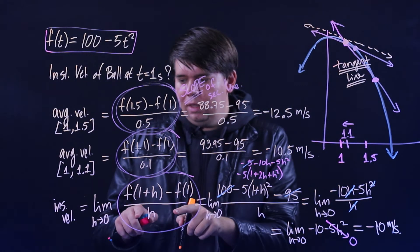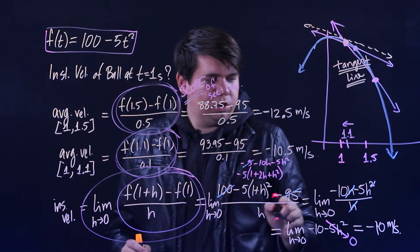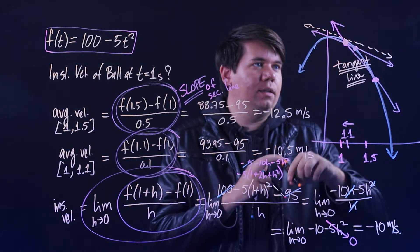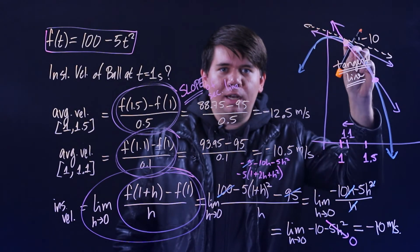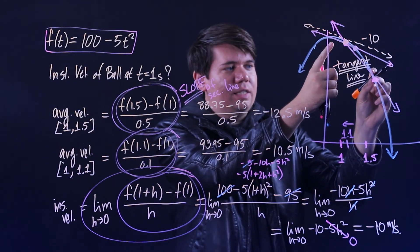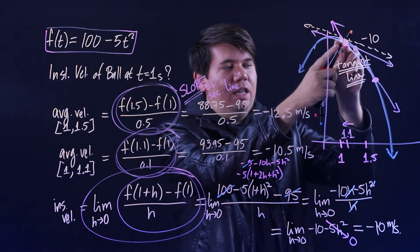And so here, the limit gives you the slope of the tangent line. This tangent line would have slope minus 10. Its slope is minus 10 because the tangent line is the result of the limit of moving the secant line with the second point closer and closer and closer to the first until, in the limit, it has just a single point there.